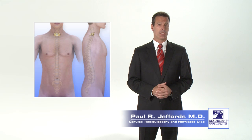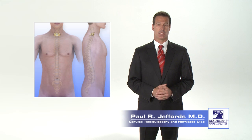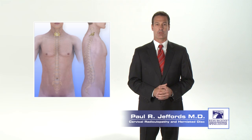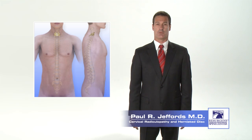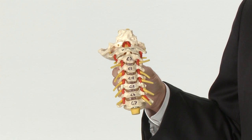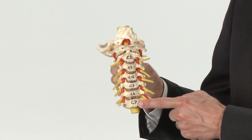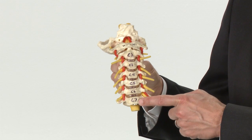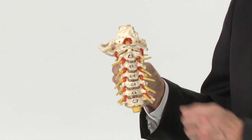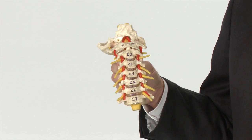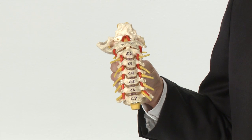In order to understand what a herniated disc is, it helps to begin with an understanding of the anatomy of your neck. The spinal column consists of 33 bones called vertebrae that are stacked one on top of the other like building blocks. In the cervical spine, there are seven of these vertebrae, labeled C1 through C7. C7 is at the bottom and sits above the first thoracic vertebra, labeled T1.